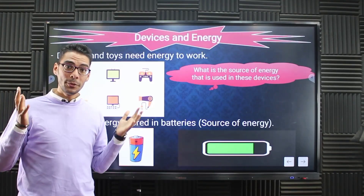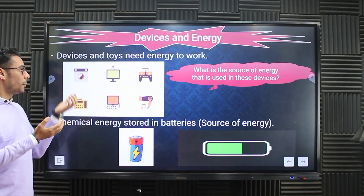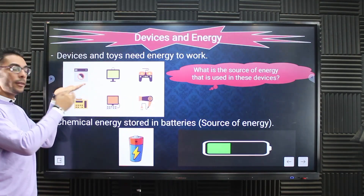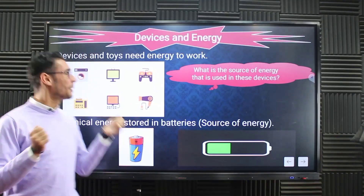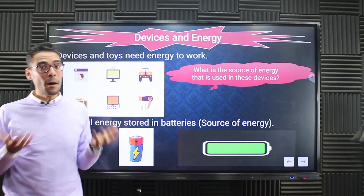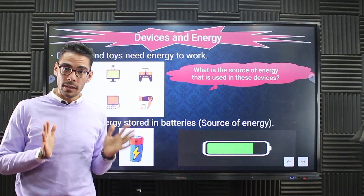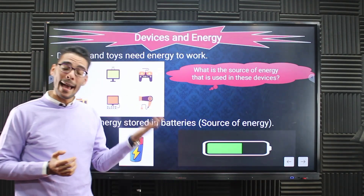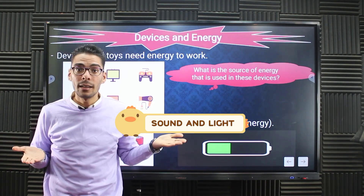The output energy is different — the energy that comes out from the electric devices varies. For the washing machine, the input is electricity but the output is movement, which is kinetic energy. For the TV, it also uses electric energy as input, but the output energy is different — can you guess? Excellent! It's light or maybe sound energy. So the input energy is the same as the previous device — electric — but the output is sound and light.